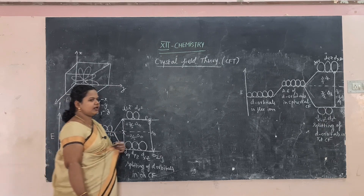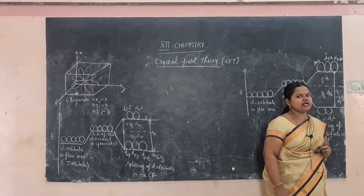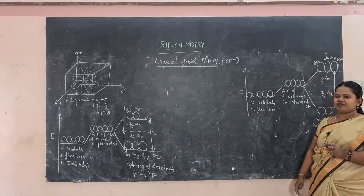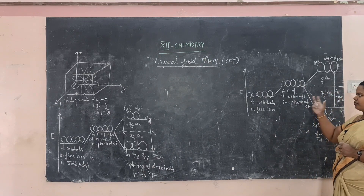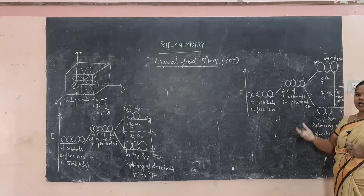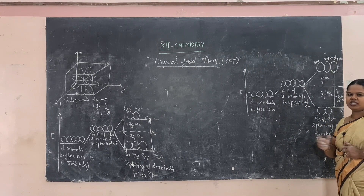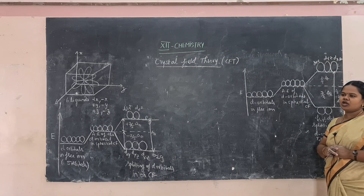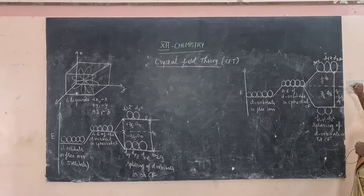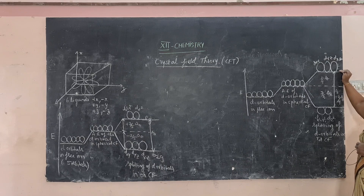Similarly, in a tetrahedral field, the central metal atom is at the center and four ligands approach from the outer sides. The d-orbitals also split into two levels: eg and t2g. In the tetrahedral field, t2g is of higher energy.